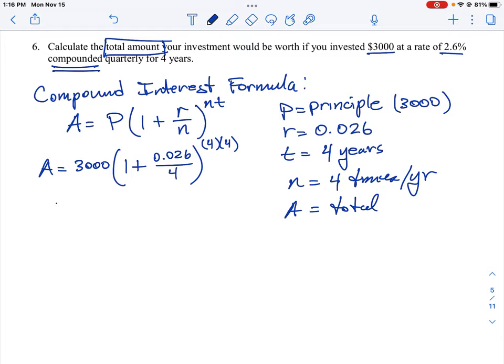This is an equation that you really can't work out in your head. You have to do this with a calculator. So we're going to do 3000 times, if we divide 0.026 by four and sum this together, it's going to give you 1.0065 all to the 16th power.